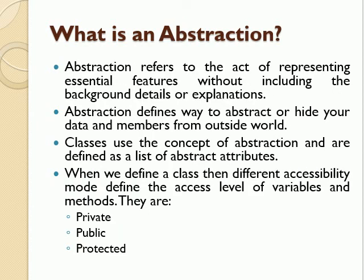Now we discuss abstraction. Abstraction refers to the act of representing essential features without including the background details or explanation. Abstraction defines a way to hide your data and members from the outside world. A class uses the concept of abstraction and is defined as a list of abstract attributes. Different accessibility modes define the access level of variables and methods, such as private, public, and protected. Those to be accessed outside the class are declared as public, otherwise private or protected.